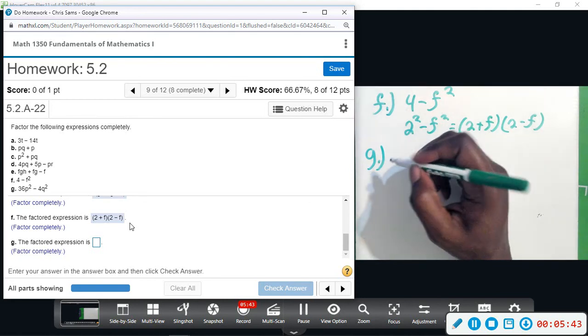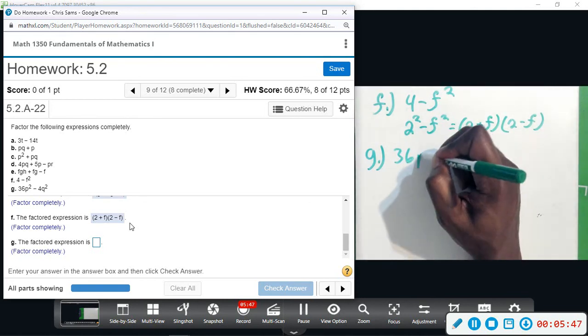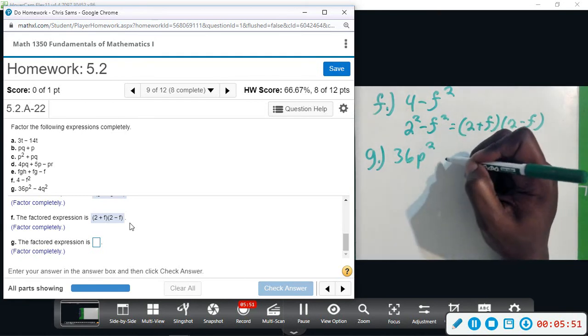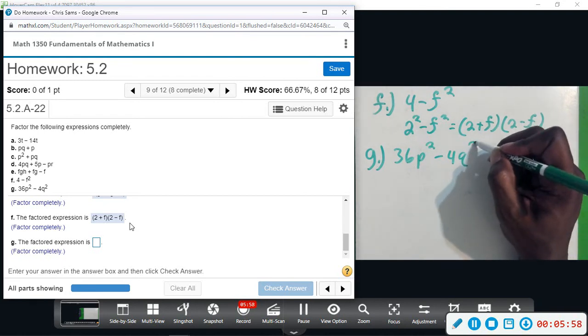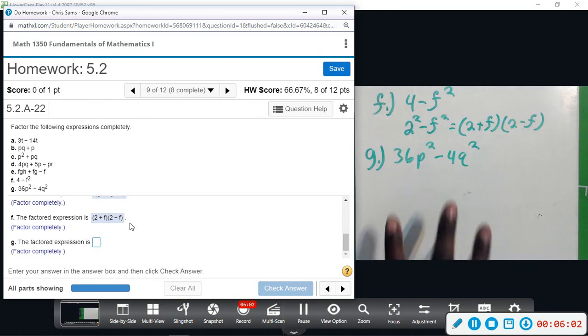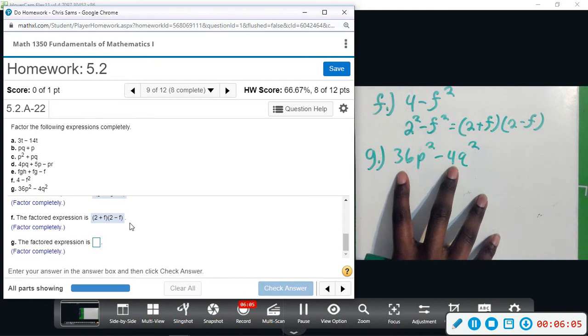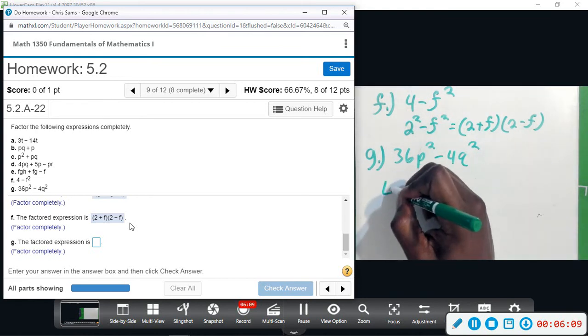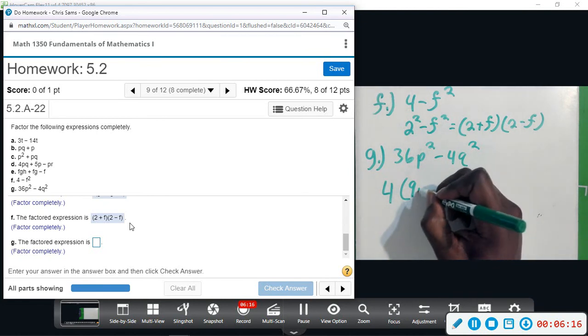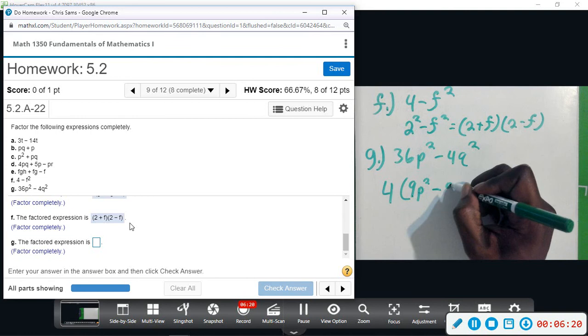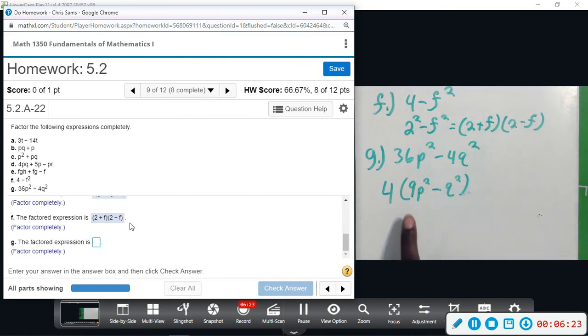And then with g, looks like we're going to be doing the same thing. We have 36p squared minus 4q squared. Now there's a couple things you can do here. One, you can factor out a 4, which I would recommend. We'll factor out a 4 first off of 36 and 4, and that will leave us with 9p squared minus q squared.